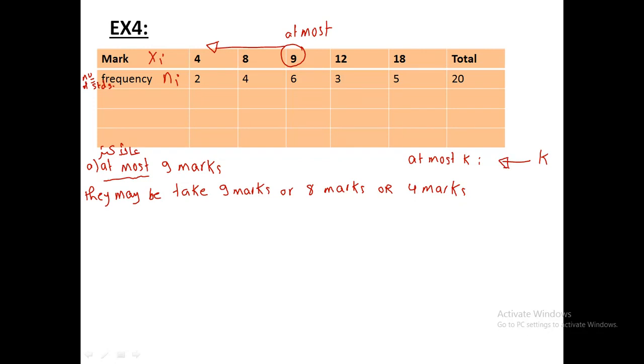So, the students who take 9 marks is 6 students, plus 8 marks is 4 students, or they can take 4 marks, 2 students. Or means plus in such lesson. So, the number of students is 12 students.